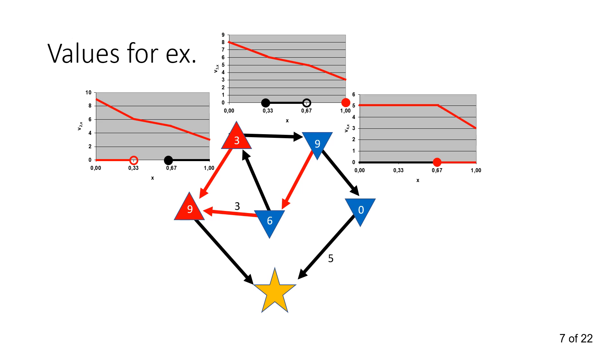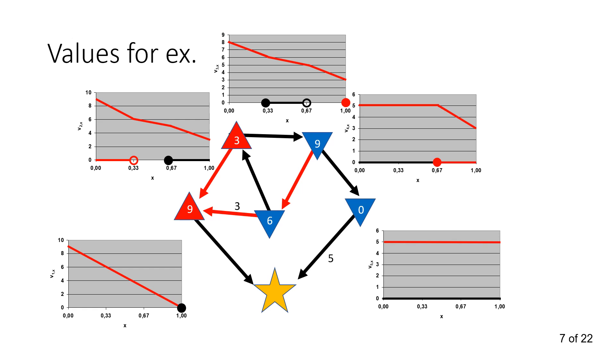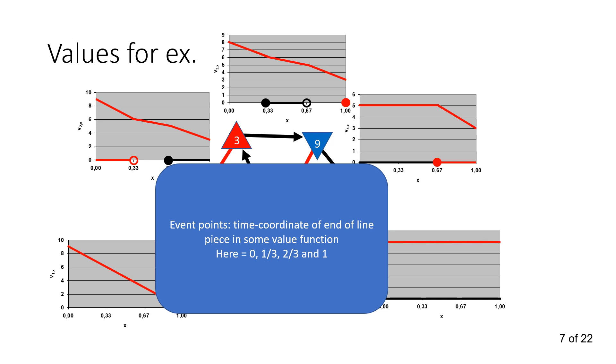The other states have simpler strategies. I'm not going to go into it in detail. The key thing here from a complexity point of view is how many event points there are. Event points are the time coordinate of the endpoint of some line piece in some value function. So here, the event points are 0, one-third, two-thirds, and 1, giving us 4 event points. This will be used as a complexity measure for this kind of games.